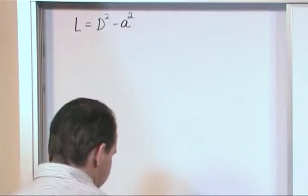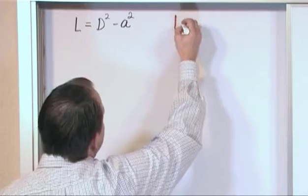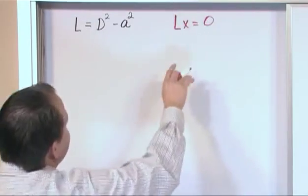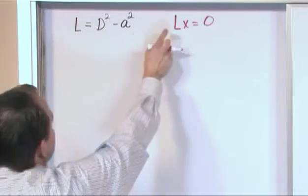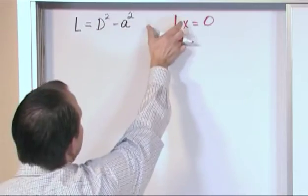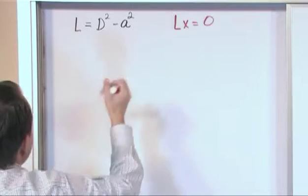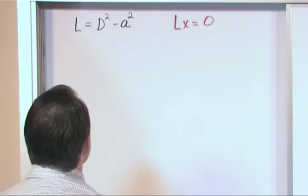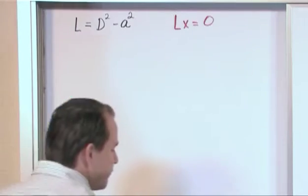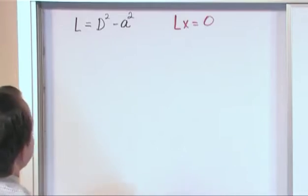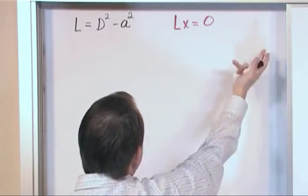If this is the linear differential operator, then the way you would write the differential equation in general would be lx equals zero. This is a homogeneous equation, so the right hand side is equal to zero. The left hand side is this operator times x — so you'd have d squared times x minus a squared times x. You can go back and look at the lesson on linear differential operators if this concept isn't solid. This is generally how we'll be writing our differential equations going forward.